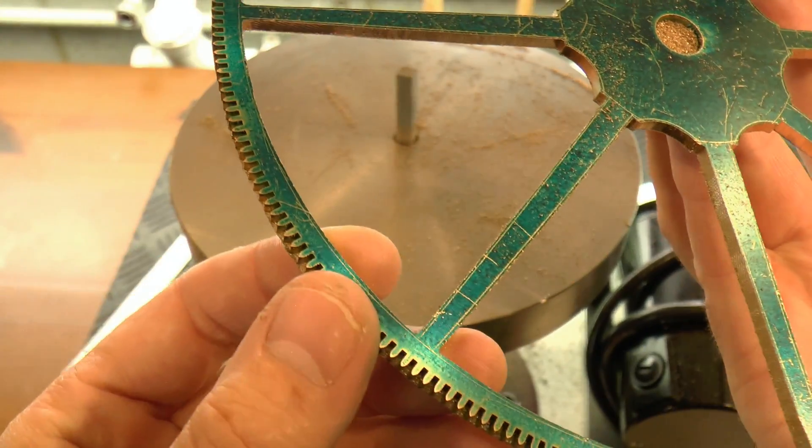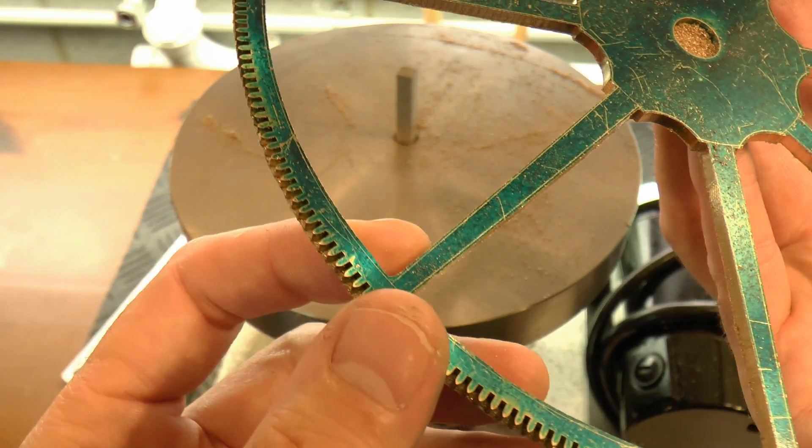So at this point I'm short of the line by about the same amount around the whole wheel, and I'm ready to start the hand filing.